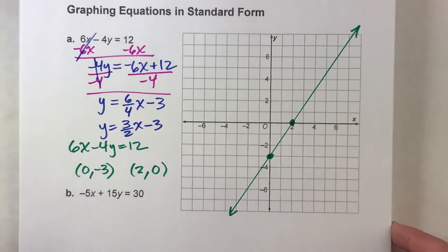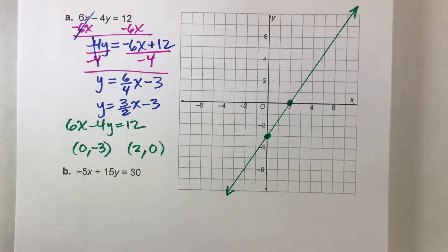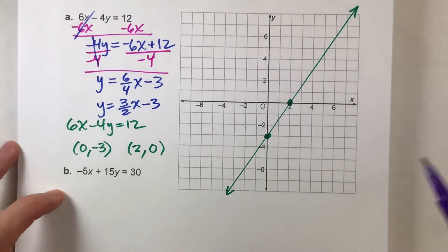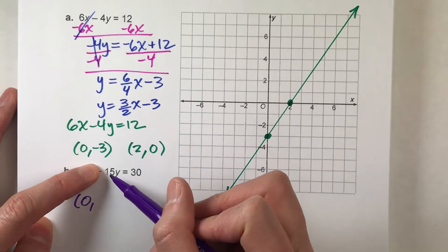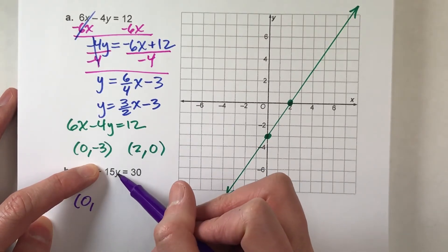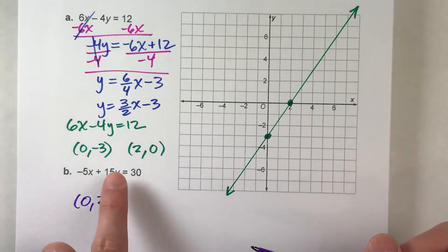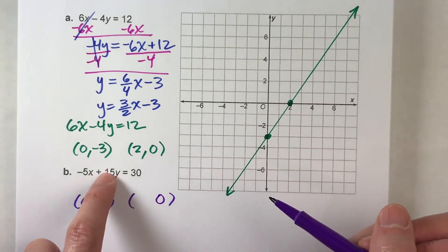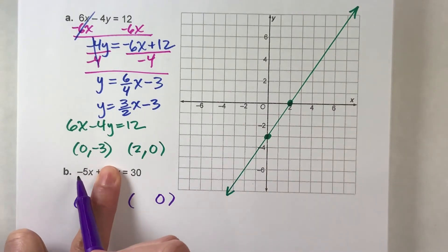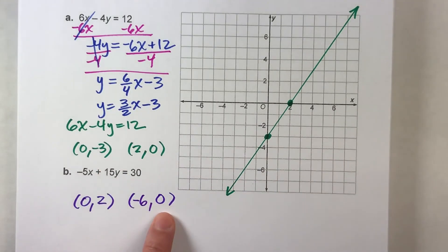Let's do a second example using just the intercepts to show you how quick it is. We've got negative 5x plus 15y equals 30. What if x was 0? Then negative 5 times 0 is 0, so 15 times y would equal 30 — 15 times 2 equals 30. So the point (0, 2) is on this line. Now, what if y is 0? Then 15 times 0 is 0, so negative 5 times what would equal 30? Negative 5 times negative 6 equals positive 30. So (−6, 0) is another point on the line.